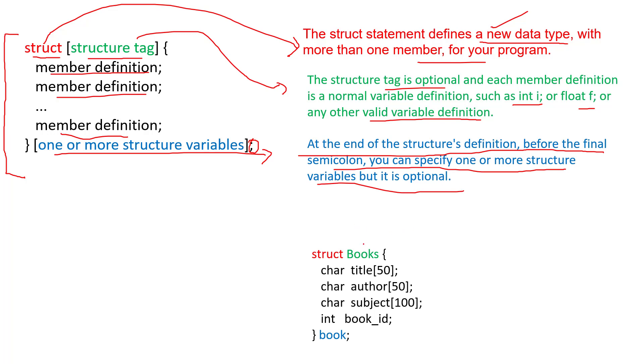This is an example of the syntax. For this one it's Books. You open the curly braces: character title with 50 characters maximum, character author name 50 characters maximum, character subject 100 characters maximum, book_id as integer. All of this except book_id will be characters. Then close the curly braces and you can continue the work by starting the book for another purpose.